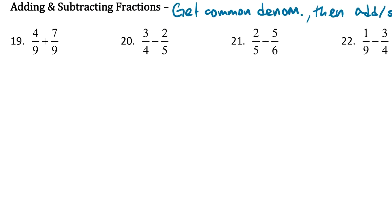So let's take a look at number 19. Denominators are already the same. They're both 9. So since they're the same, we can just go ahead and add the top. So 4 plus 7 is 11, and we keep the denominator the same. We're done. That's it.